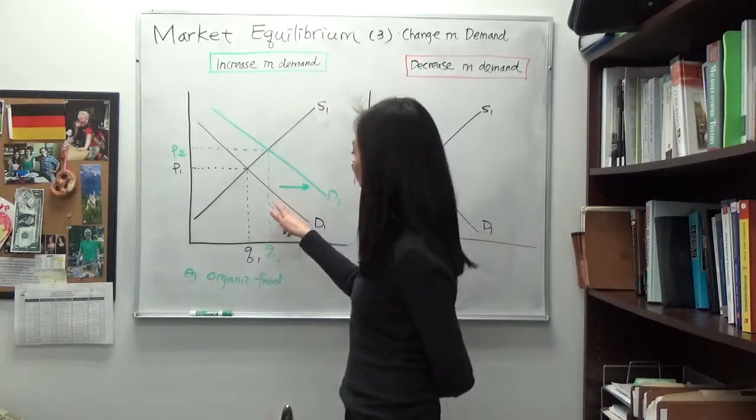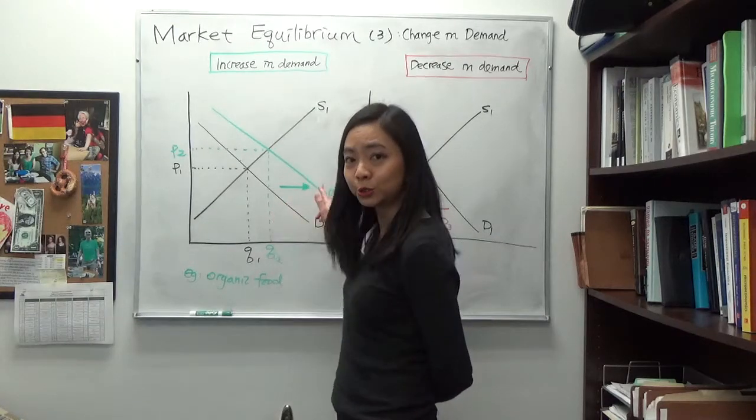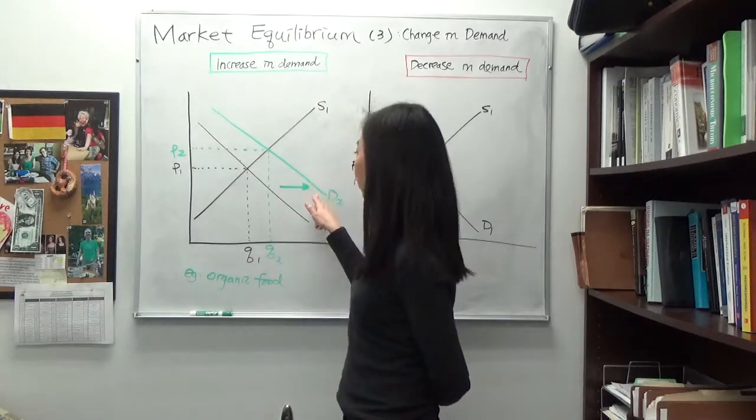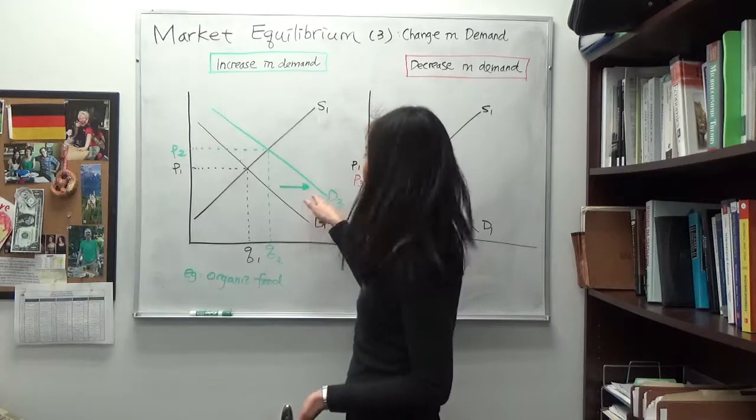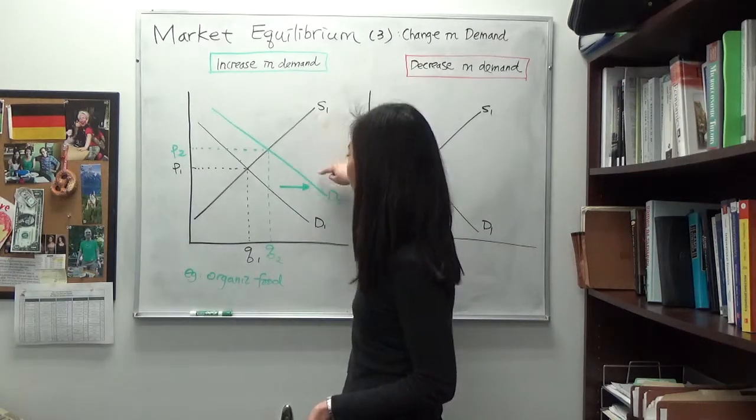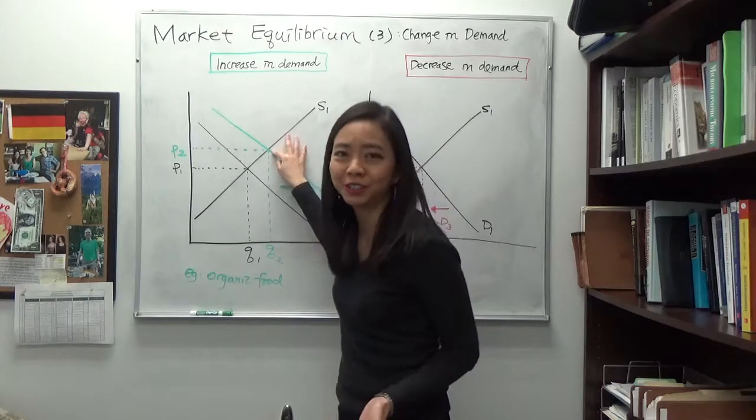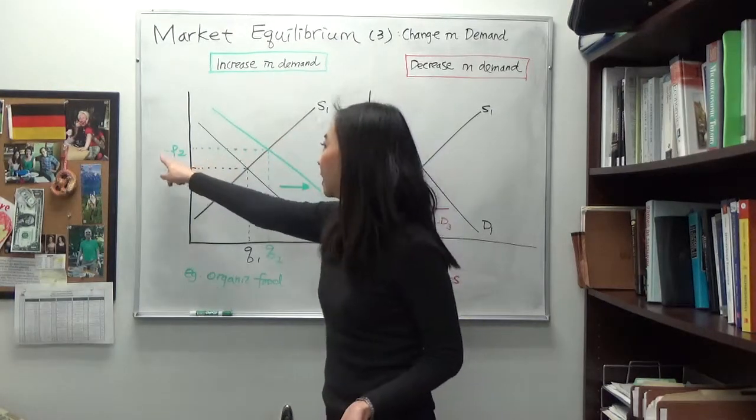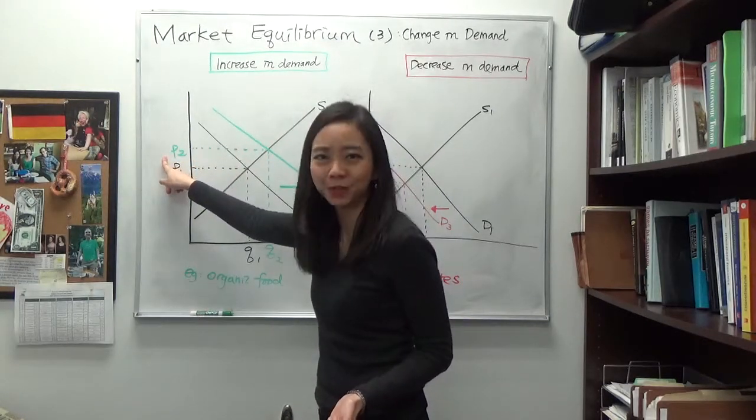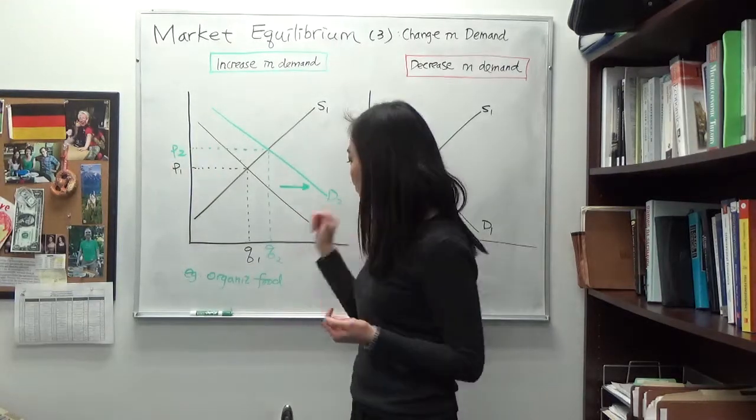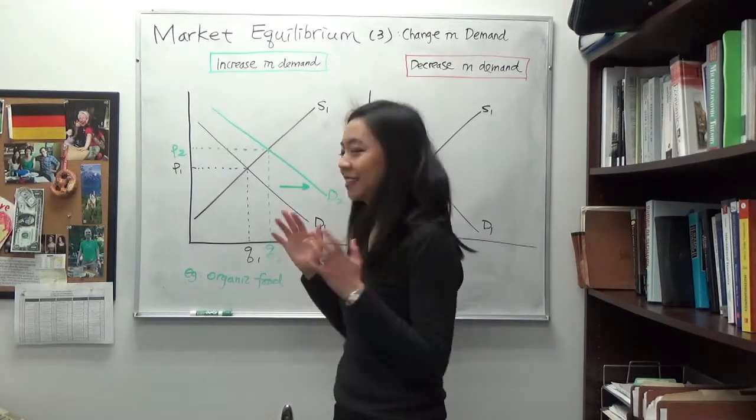So after the shift, we're moving from D1 to D2. And at the new intersection of D2 and S1, your new demand curve and your supply curve, you will see the new intersection. That will tell you the new equilibrium price P2 and the new equilibrium quantity Q2.